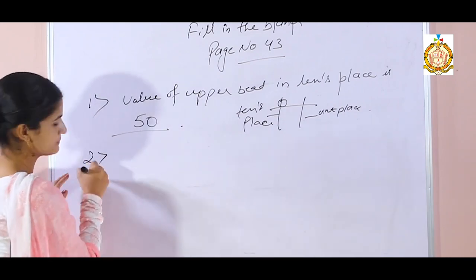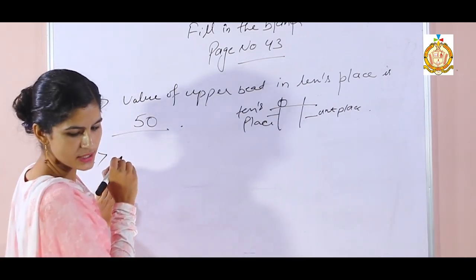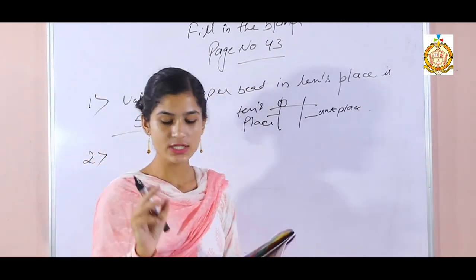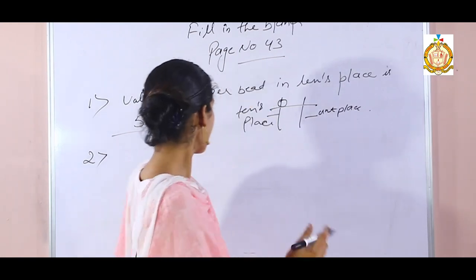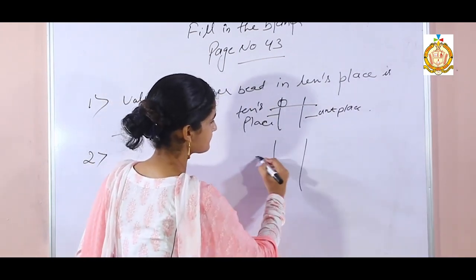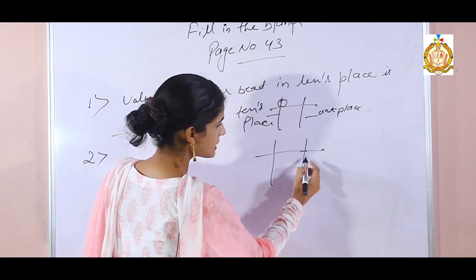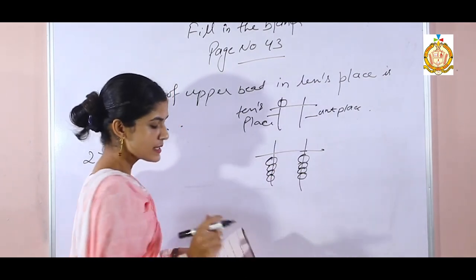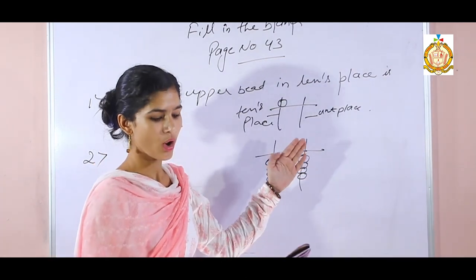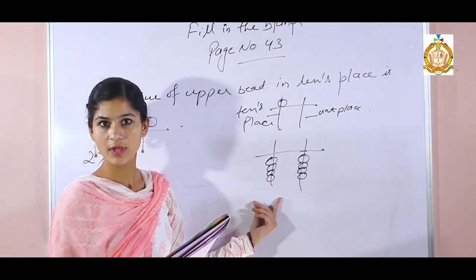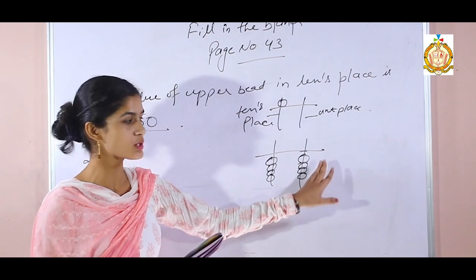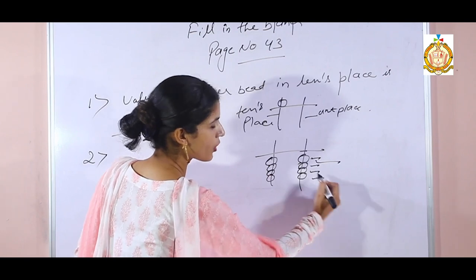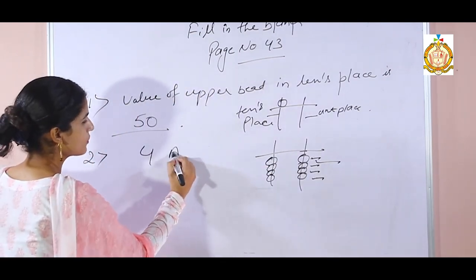Second fill-in: there are dash beads on each rod on the lower side of the abacus. These beads are called lower beads. Count the beads on each rod on the lower side: 1, 2, 3, 4. How many beads are there? 4. So your answer is 4.